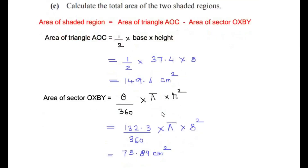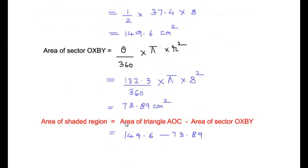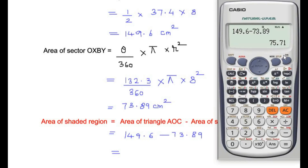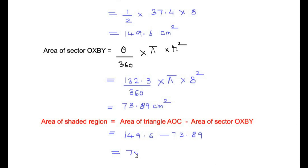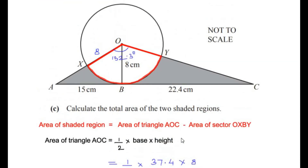Finally, we find the area of the shaded region by taking the difference: area of triangle (149.6) minus area of sector (73.89), which gives us 75.71 centimeters squared. So the total area of the shaded region is 75.71 cm².